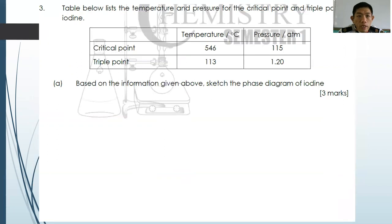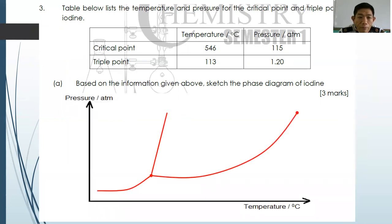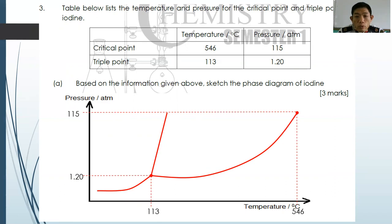Now, question number three: the table lists temperature and pressure of the critical point and triple point for iodine. Sketch the phase diagram for iodine. First, you must have the pressure-against-temperature axes — that's one mark. The second mark goes to the curve, which has a positive gradient for iodine. The third mark goes to labeling the critical point, the triple point, and the regions for solid, liquid, and gas.